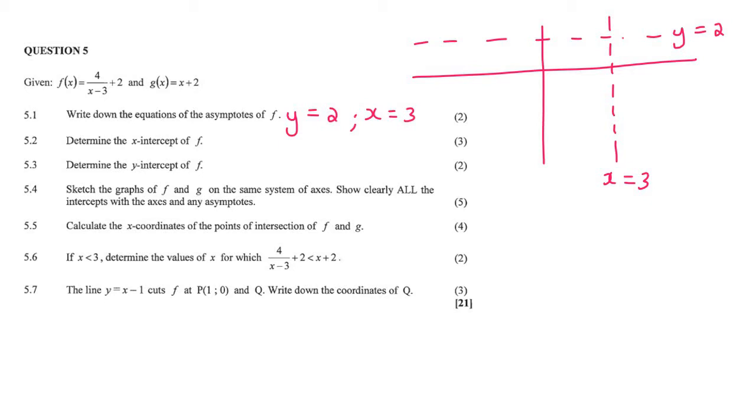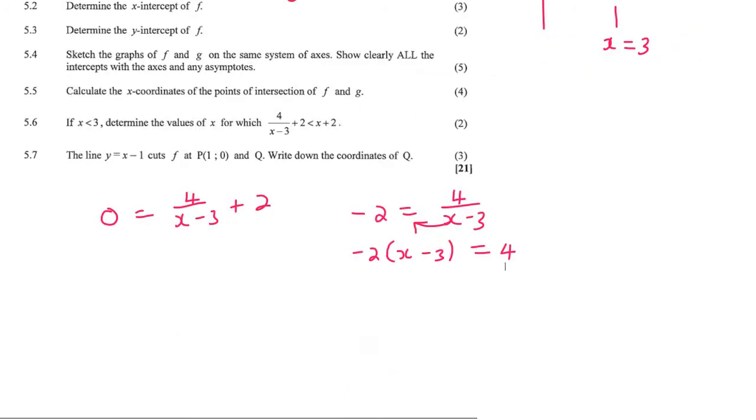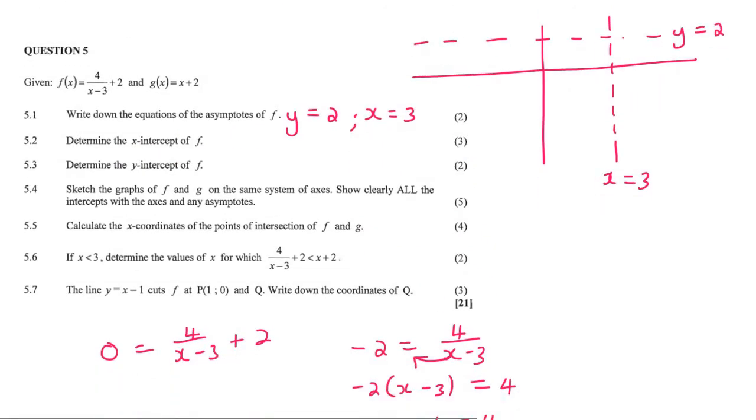5.2 determine the x-intercept of f. To find an x-intercept we make y equal to 0. So we're going to say 0 equals 4 over x minus 3 plus 2. I would take the 2 over to the left hand side. Now we need a common denominator. The common denominator is x minus 3. So I'm going to multiply this x minus 3 up to the top. But I always put it in a bracket like that. A lot of students don't and it leads to silly mistakes. That would then give us negative 2x plus 6 equals 4. And then negative 2x equals negative 2. And then x would be equal to 1. When they say the x-intercept, remember that is going to be not just 1, but you must say that x is 1 and y is 0.